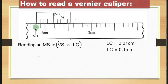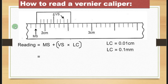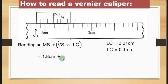This mark here is the same as this one. If you have 1 on this side, counting forward: 1.1, 1.2, 1.3, 1.4, 1.5, 1.6, 1.7, 1.8, 1.9 — that's when it becomes 2. So this marking here will be 1.8. So the main scale reading is 1.8 centimeters. Then you put a plus, open brackets, and now find the Vernier scale reading.